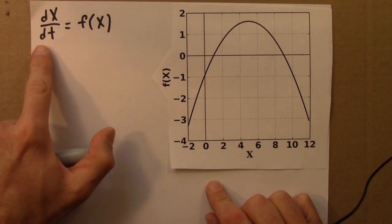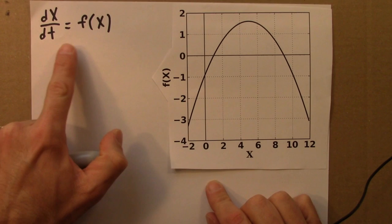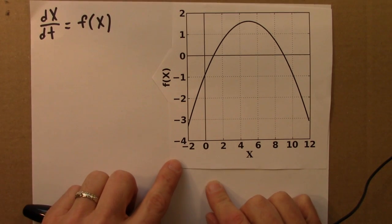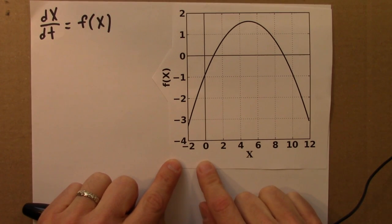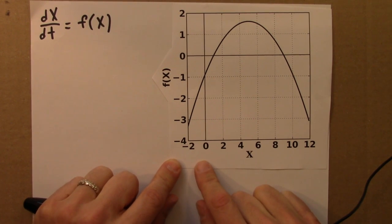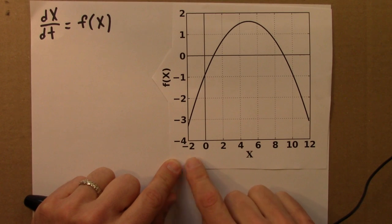We're solving differential equations of this sort, dx/dt equals f(x), and I've given you the graph of f. And we can come up with a phase line for this. We can also sketch solutions x as a function of t.